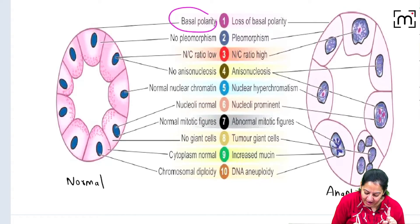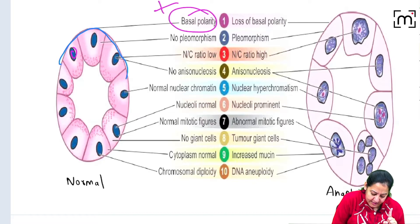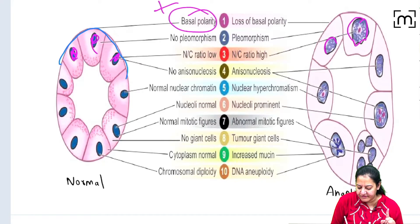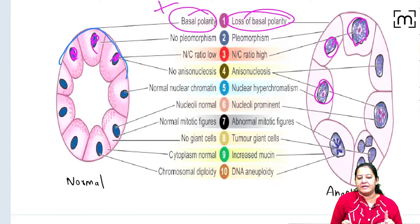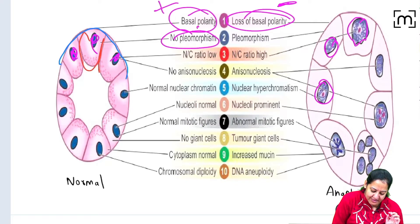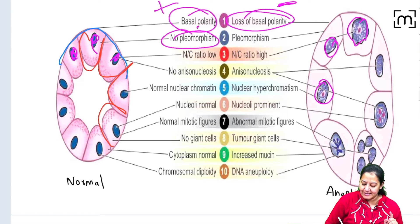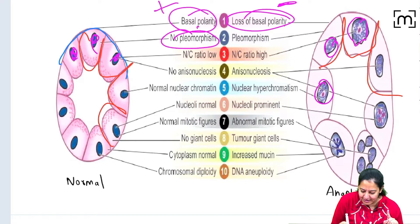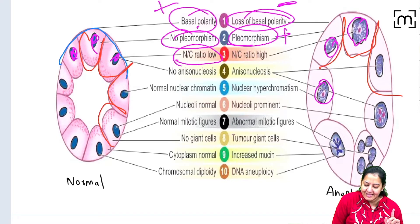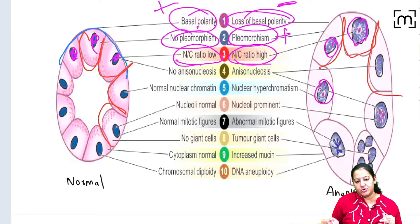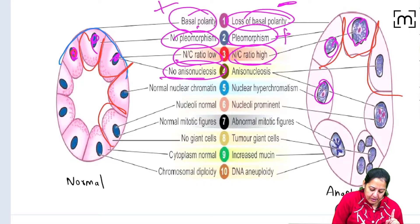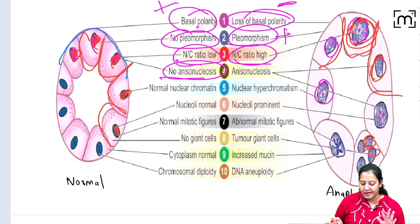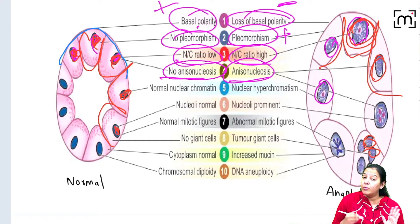The 10 features of anaplasia are: first, loss of basal polarity — normally the nucleus is oriented towards the basement membrane, but in malignancy it is haphazard. Second, pleomorphism — in malignancy cells vary in shape and size. Third, increased nucleus-to-cytoplasmic (NC) ratio. Fourth, anisonucleosis — variation in nucleus shape and size. Fifth, hyperchromatism — the nucleus appears dark blue due to compactness of chromatin.